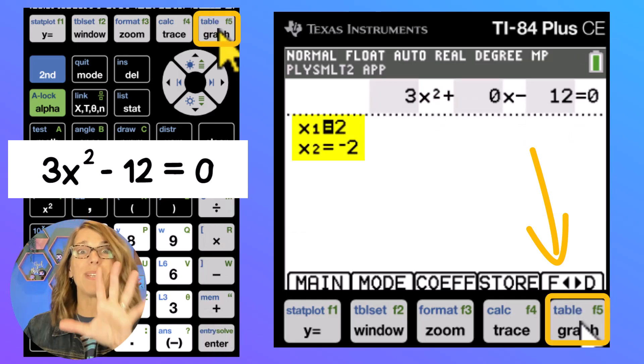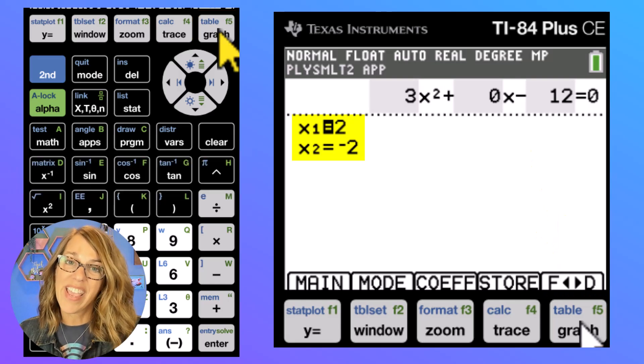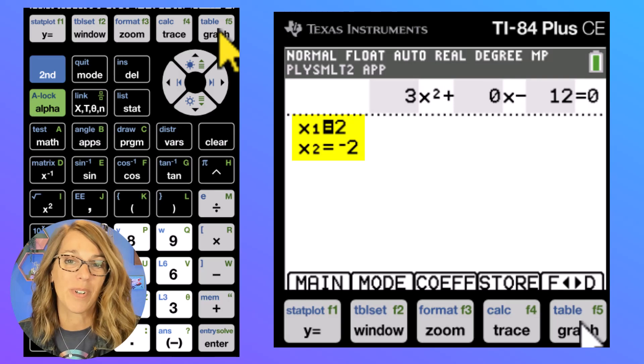If I hit solve, it gives me both solutions at the same time. There's that 2 and the negative 2 that we were looking for. The five tips that we just covered is just a super small sampling of all that this calculator can do. Subscribe so that you don't miss out on more.